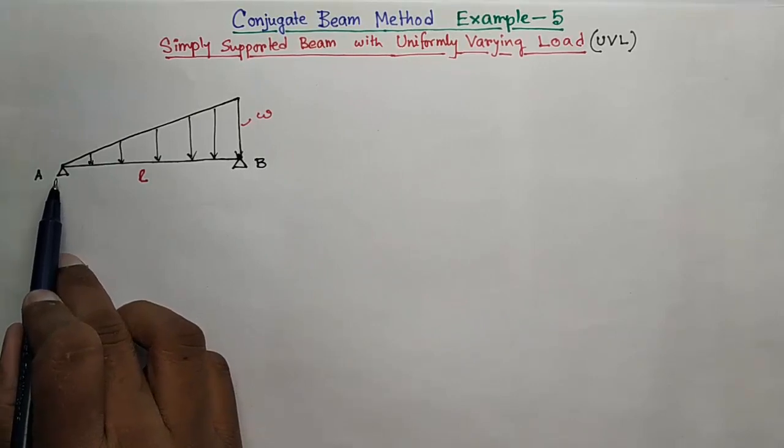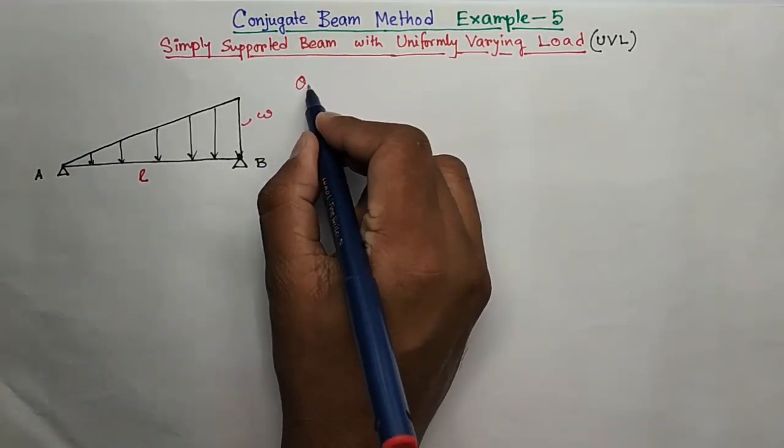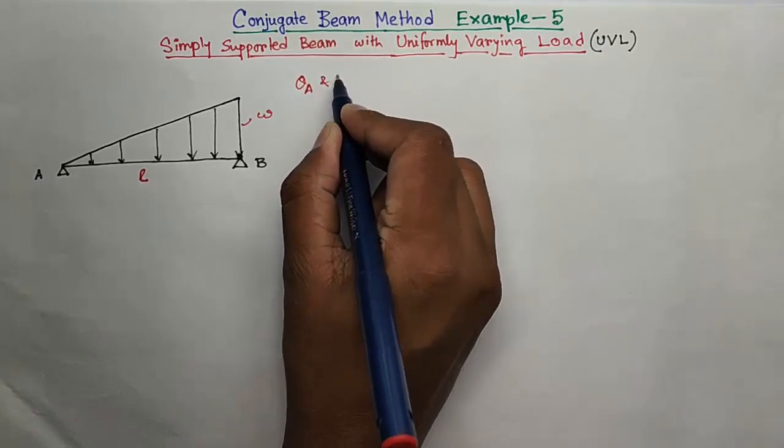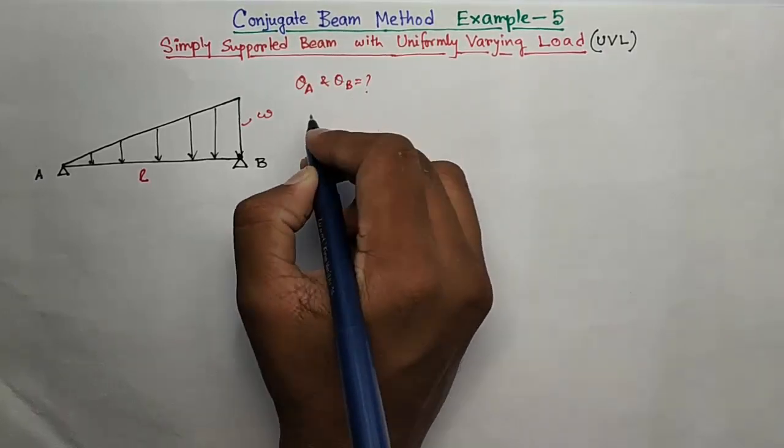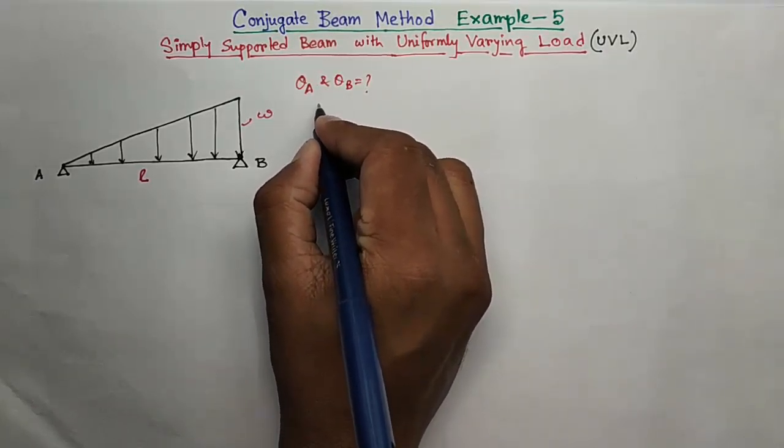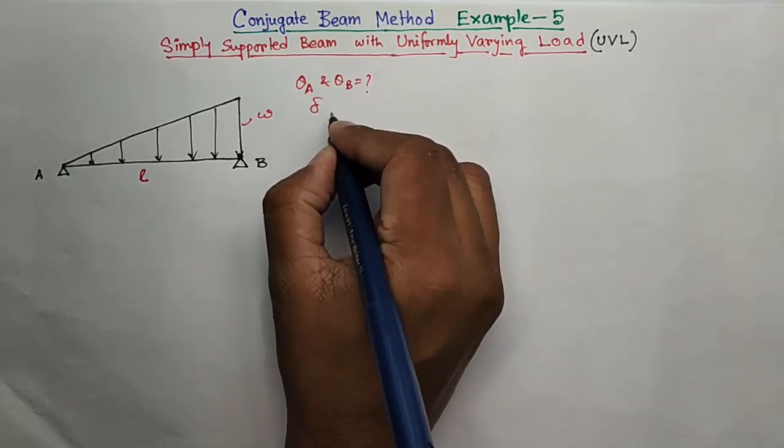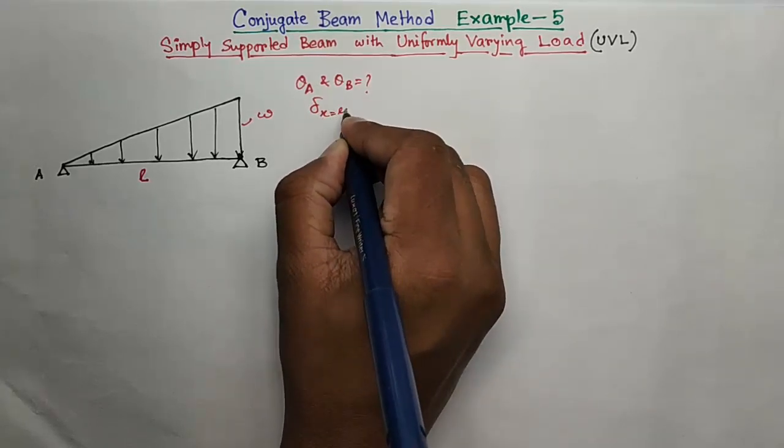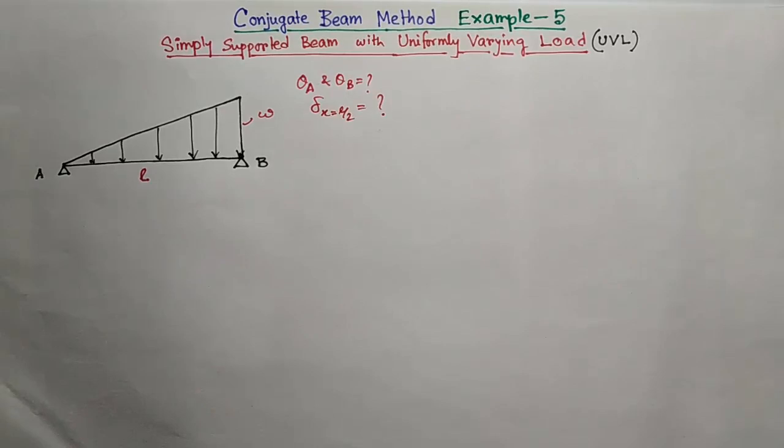We will determine its slope at point A and B, theta A and theta B, and also find the deflection at mid-span at x equal to L by 2. So let's start.